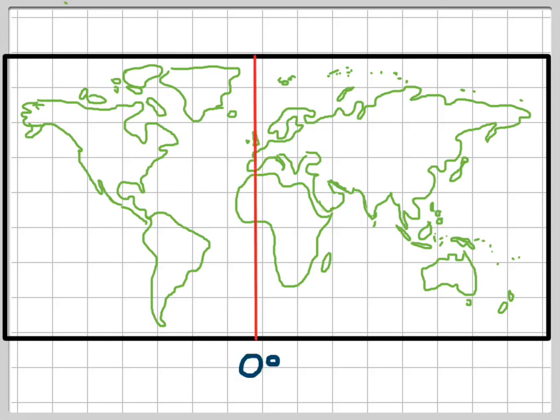As this is the main meridian, we call it the prime meridian. And so sometimes you'll hear zero degrees also referred to as the prime meridian.